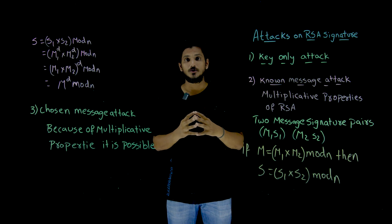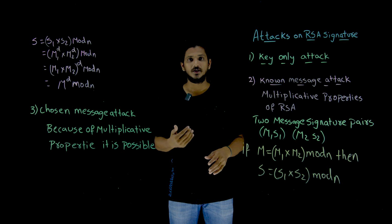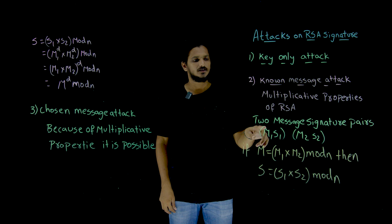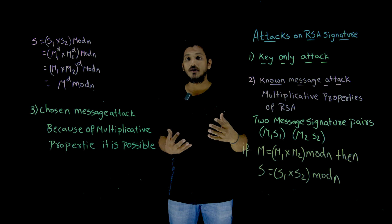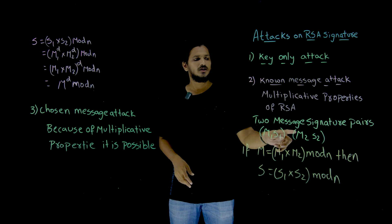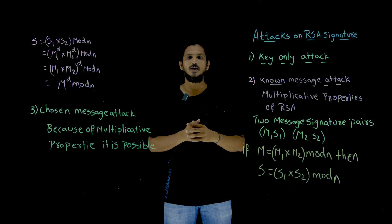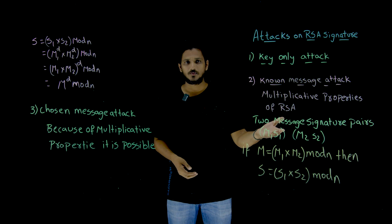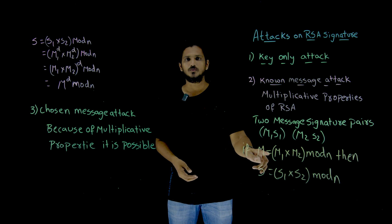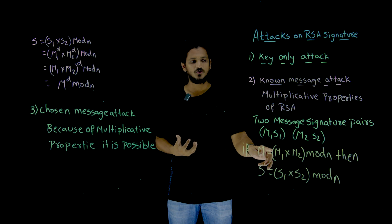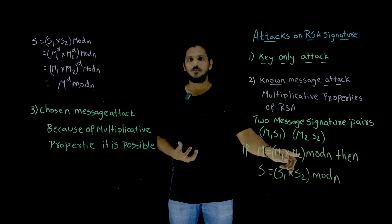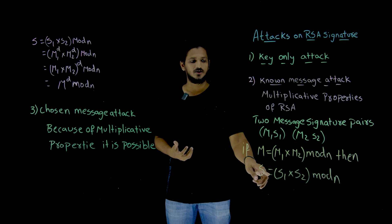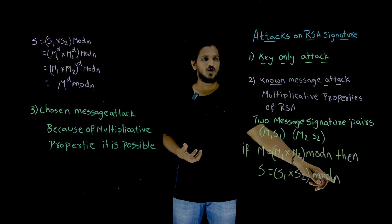So what is that multiplicative property? Let's understand what known message attack means. Suppose you have access to message-signature pairs — two pairs: M1, S1 and M2, S2. You can apply the multiplicative property on this. The multiplicative property means: if the new message M equals M1 multiplied by M2 mod N, then the new signature S equals S1 multiplied by S2 mod N.